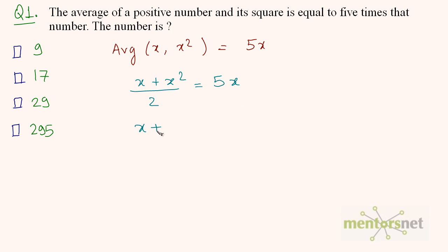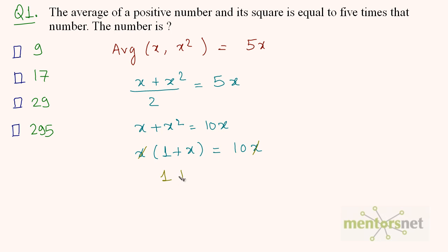So x plus x squared is equal to 10x. We can take x common from here. x times (1 plus x) is equal to 10x, and this x gets cancelled out. So 1 plus x is equal to 10. Therefore, x is equal to 10 minus 1, which is 9. Therefore, the number is 9.